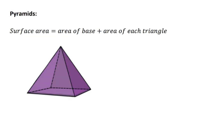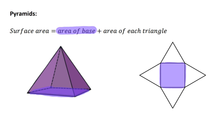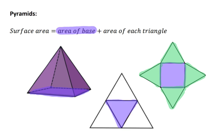For the surface area of a pyramid, it will always be the area of the base plus the area of each triangle. In the sketch we have a square pyramid, which means we will have four triangles to determine the area of and add to get the total surface area. But if it's a triangular pyramid, the base is also a triangle and then we have three triangles on the sides that need to be added.